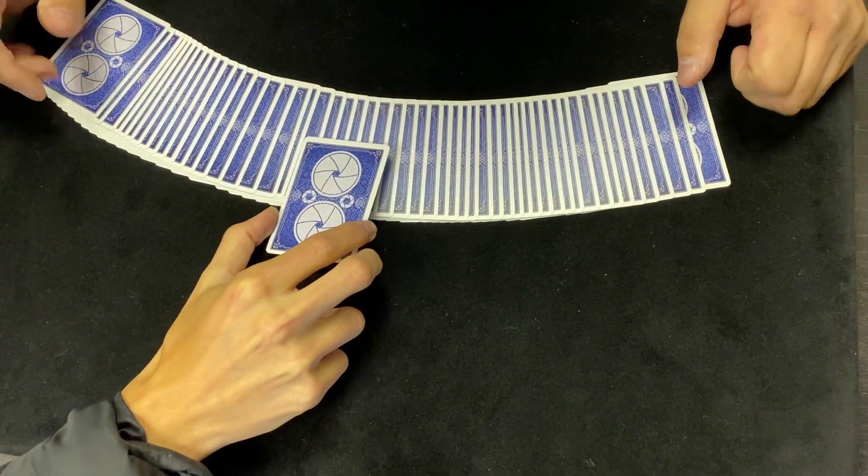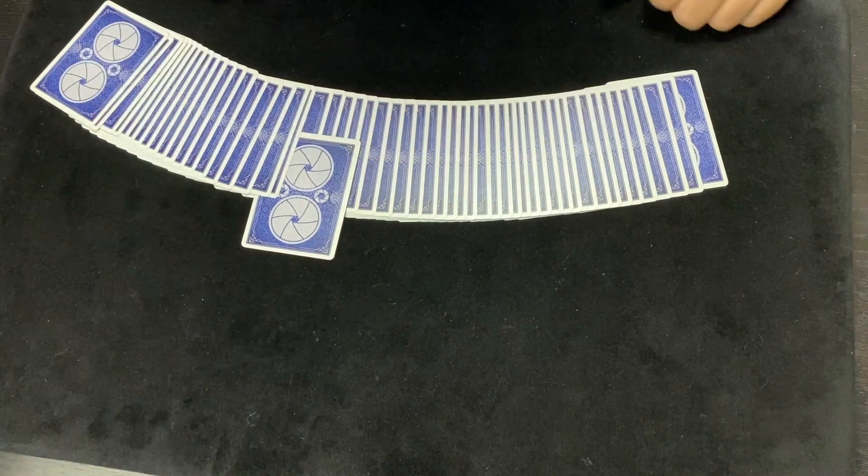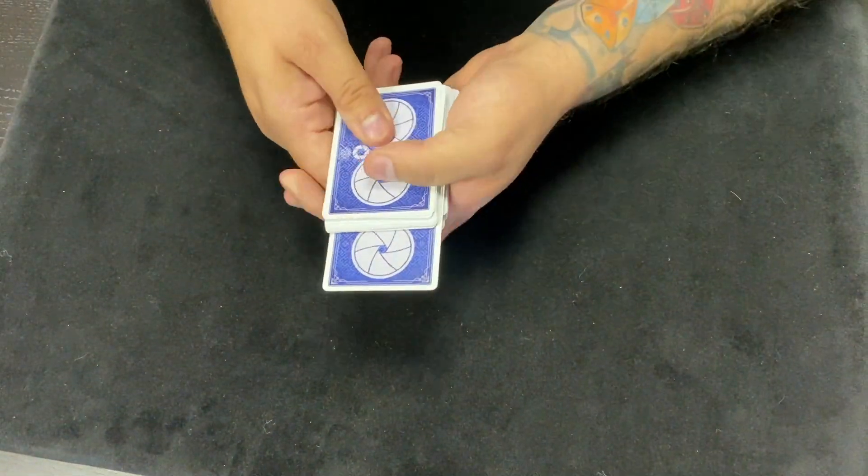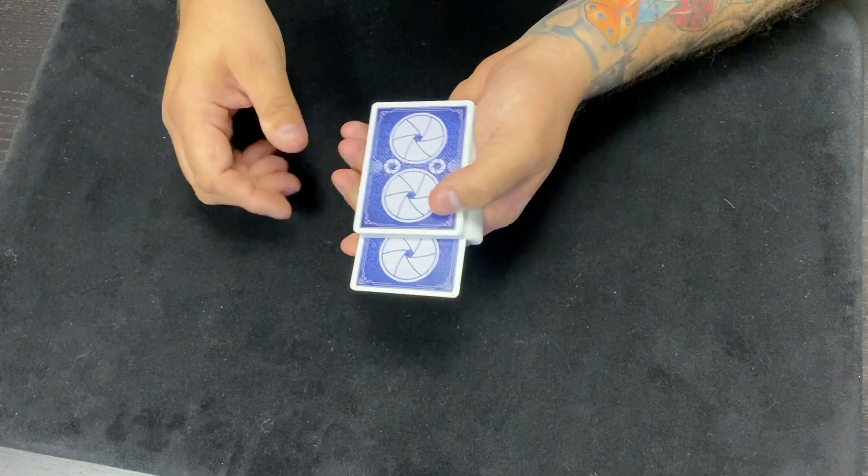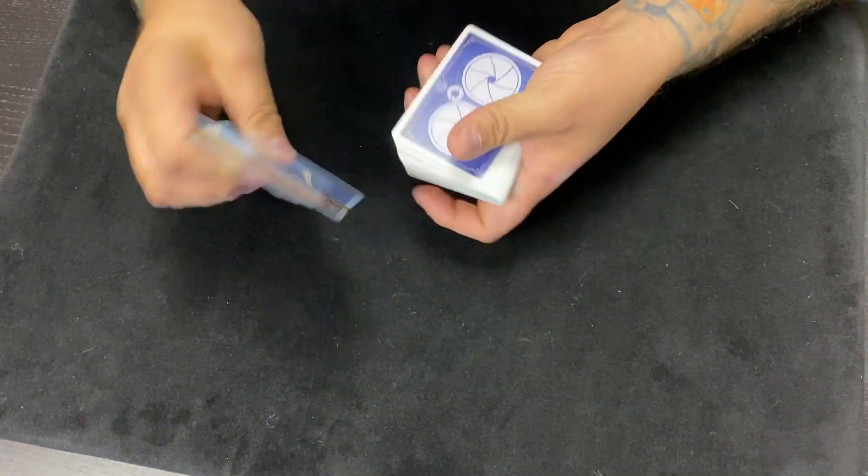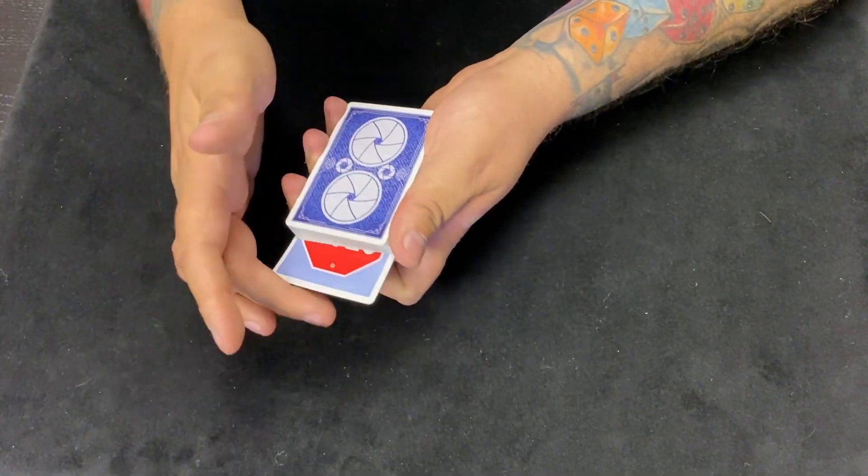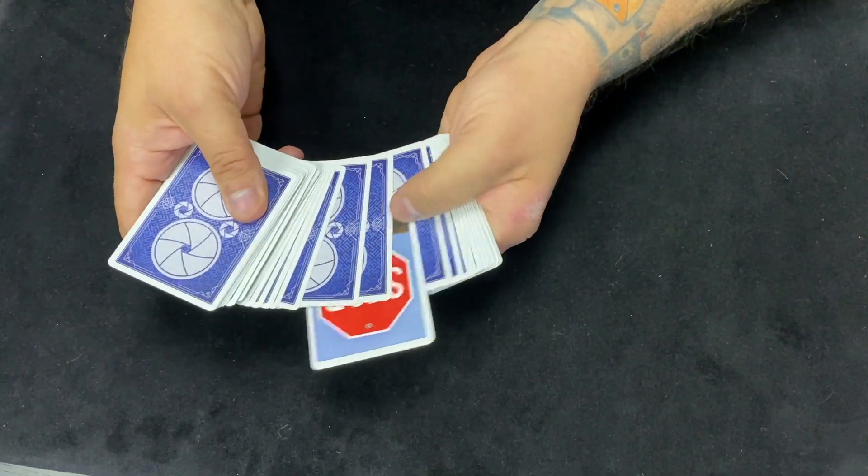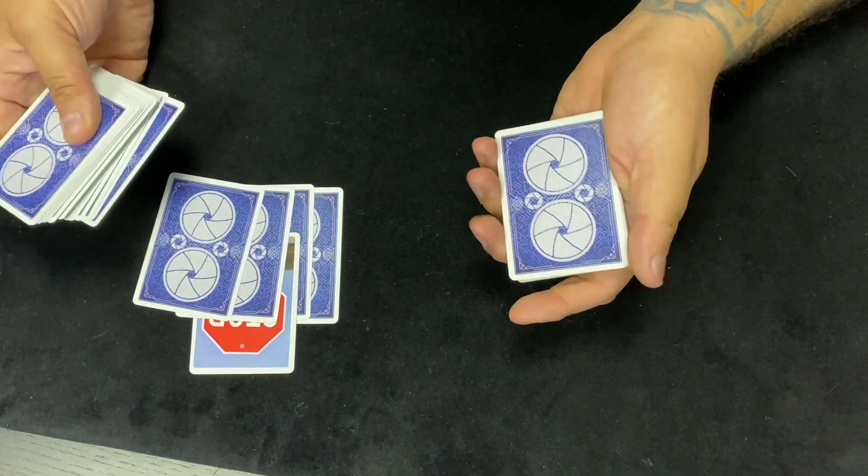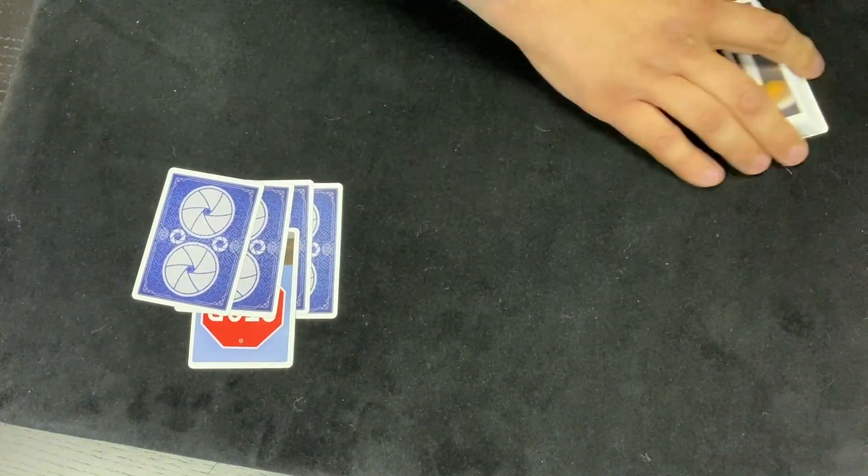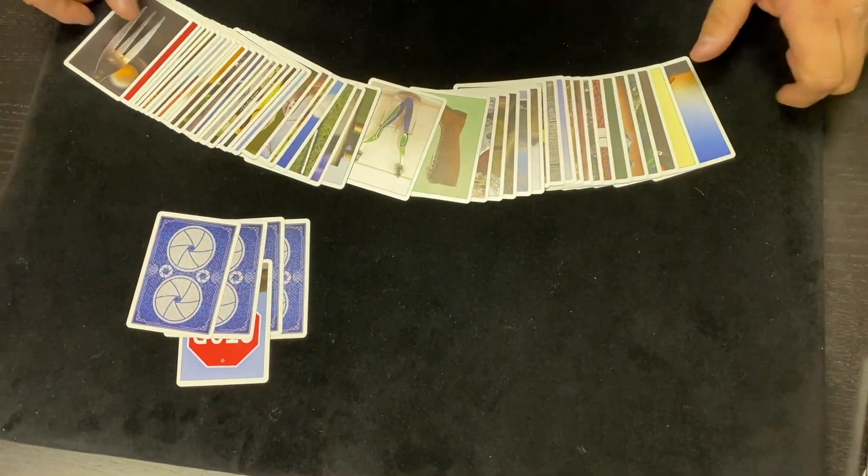Yeah, like that. Now magicians call this out-jogged because the card's jogging out. And again, you could have put it anywhere, that stop sign. You decided to put it right there. Is that fair? Yeah. And we're going to look at the four cards that you put it next to, because again you could have put it next to any one of these, any one at all, but we're going to see which four that you put it next to.